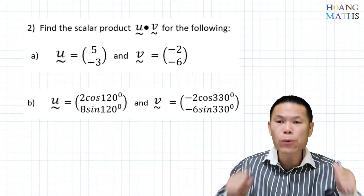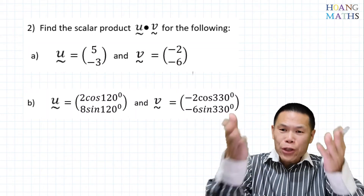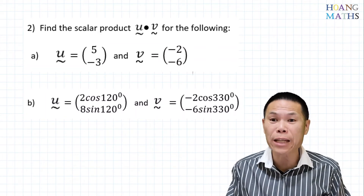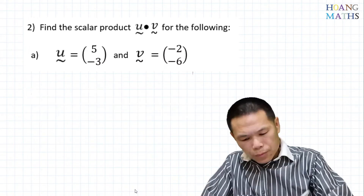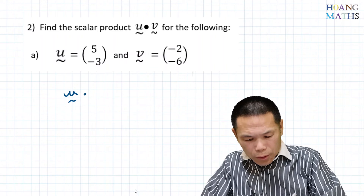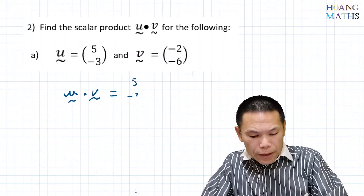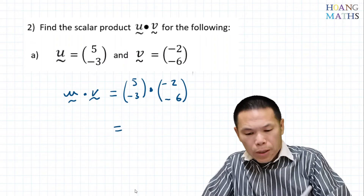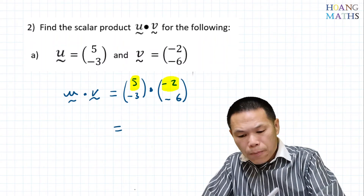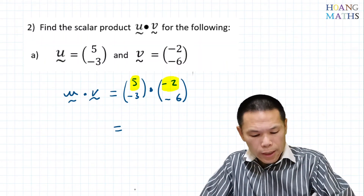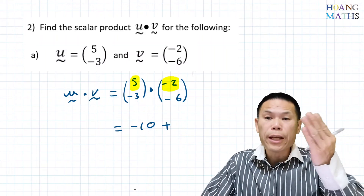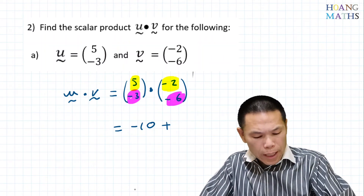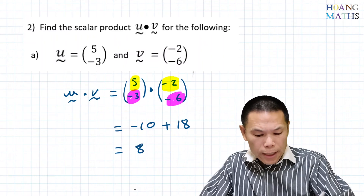Please pause the video and try this one yourself. Please don't forget to give me a thumbs up and subscribe if you haven't done so — you can help me grow my channel. So U dot V: that gives me 5, negative 3 dot negative 2, negative 6. We multiply the i components together: 5 times negative 2 is negative 10. And we add negative 3 times negative 6, which is 18. So negative 10 plus 18 gives 8.